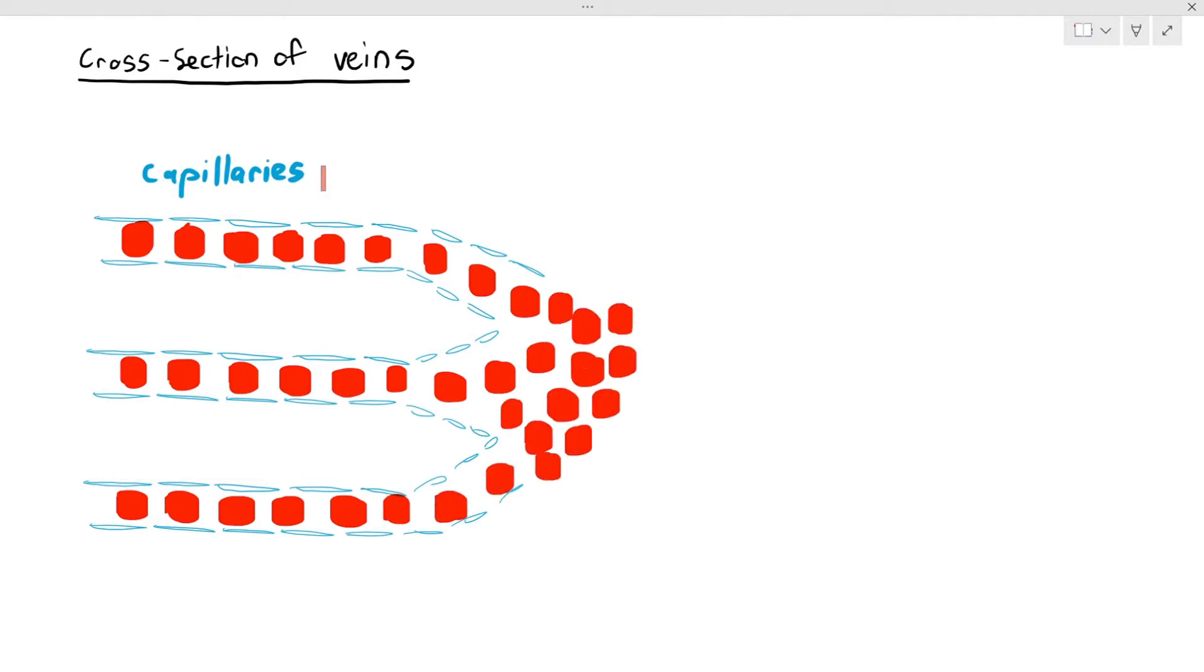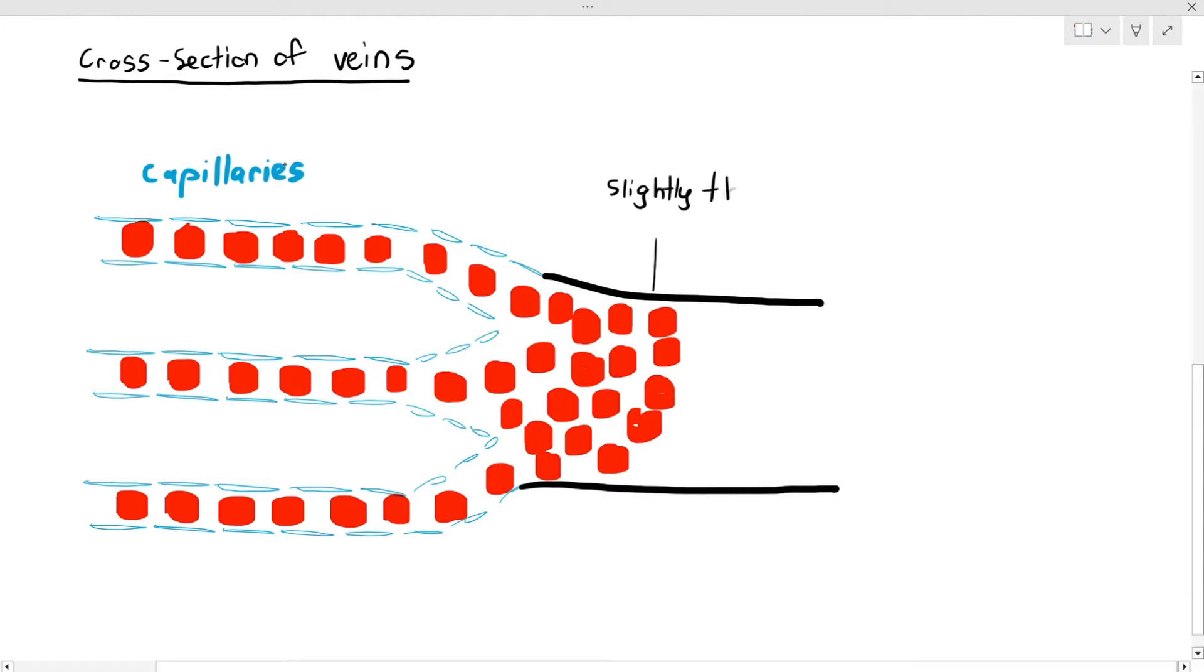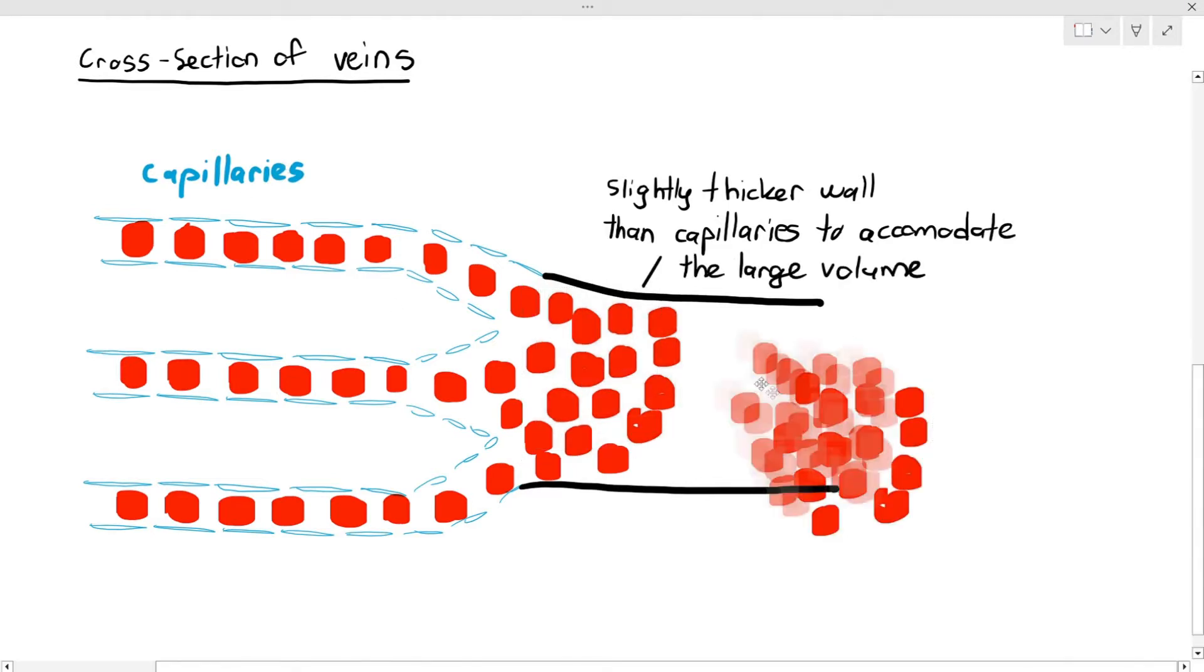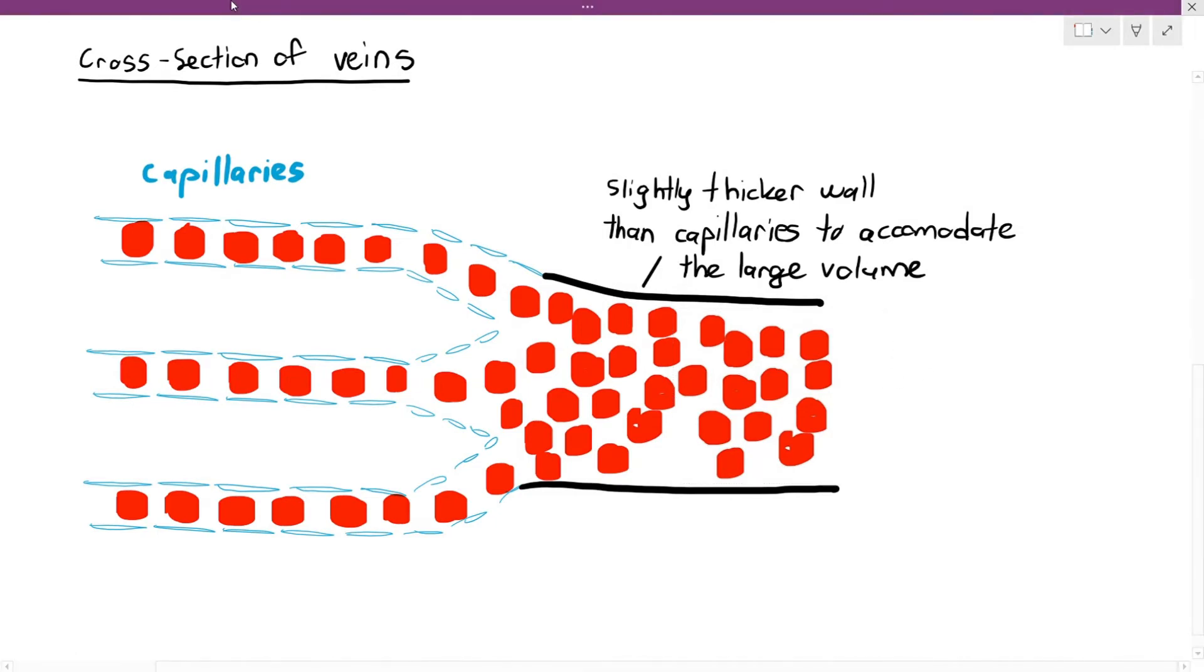But then they will drain into venules. Now, as you can see, the capillaries have a smaller volume of blood. But when it goes into the venules, the volume of blood becomes larger. So when the volume of blood becomes larger, the wall has to be slightly thicker than the capillaries to accommodate that slightly larger volume of blood. Because if the wall of the venules remain thin, like the capillaries, the wall might burst because it cannot withstand the mass or the pressure that the higher volume of blood is exerting against the wall. Hence why the venule will actually need to have a thicker wall.